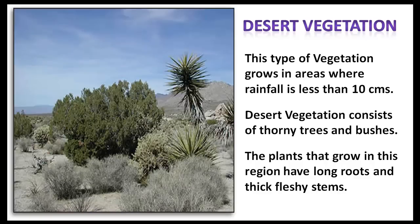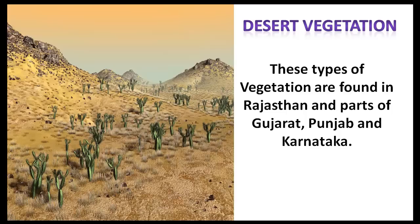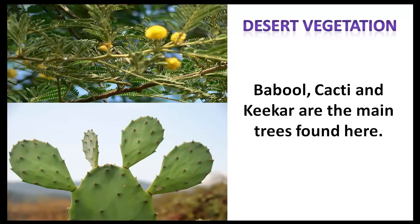Desert vegetation grows in areas where rainfall is less than 10 cm. It usually consists of thorny trees and bushes. The plants that grow in this region have long roots and thick fleshy stems. These types of vegetation are found in Rajasthan and parts of Gujarat, Punjab and Karnataka. Babool, Cacti and Kika are the main trees found here.